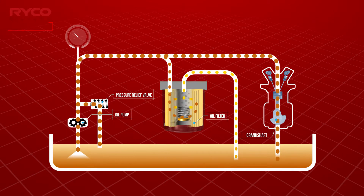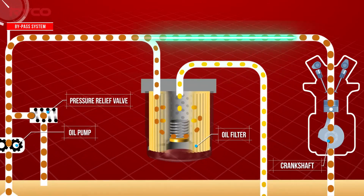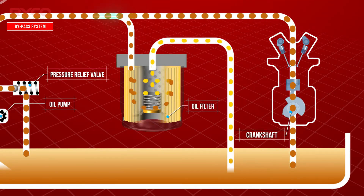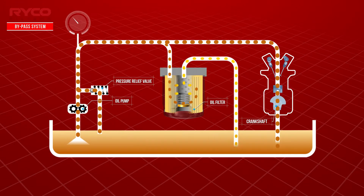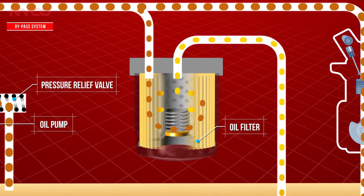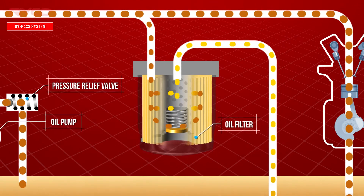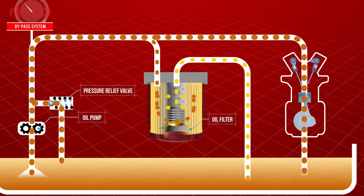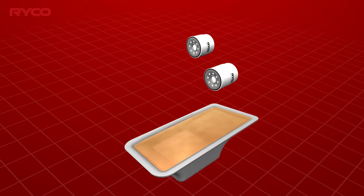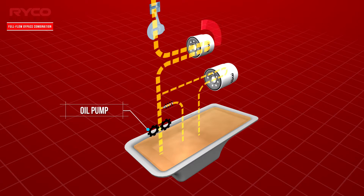A bypass system is one in which most of the engine oil bypasses the filter and travels directly to the rotating engine components. The remaining oil is pushed through the filter and returned to the sump. The oil filters used in bypass systems are designed to remove much smaller particles than a full flow type. Bypass types are not as common as full flow and are generally found on commercial or older passenger vehicles.